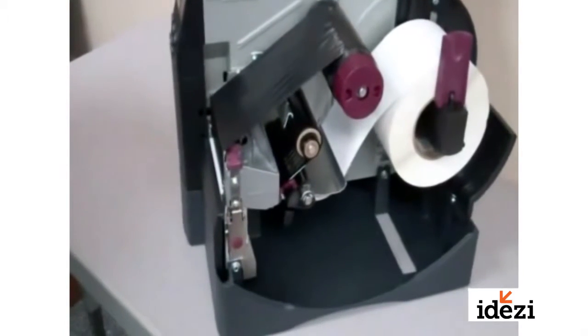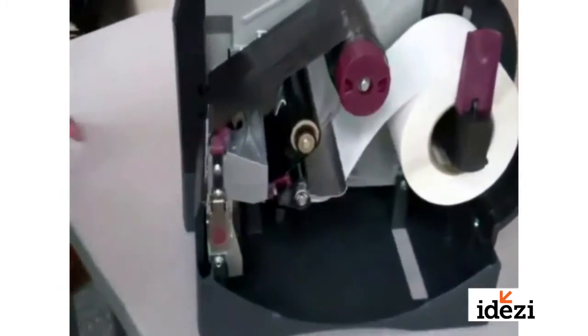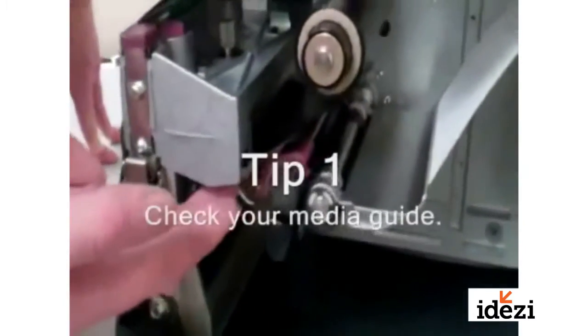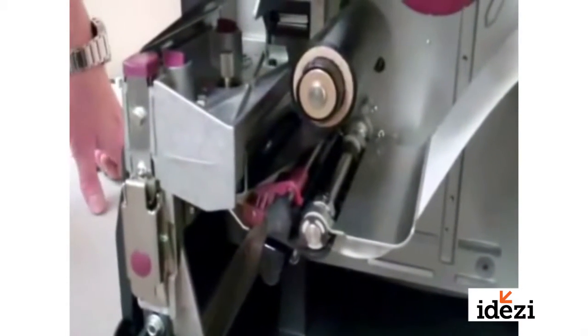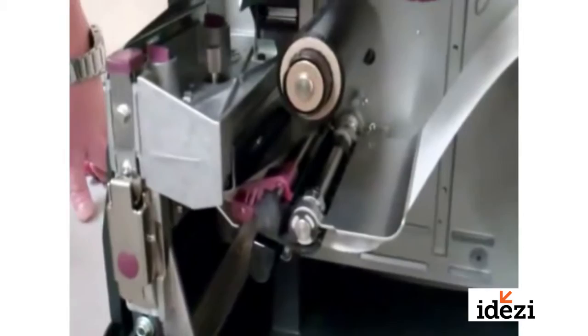The first of which is something that you can do as a user of the printer is check your media guide. Your media guide is located right here on this particular printer. Every printer's got one. You'll just need to locate where yours is located on your particular printer.